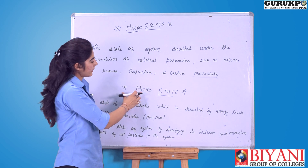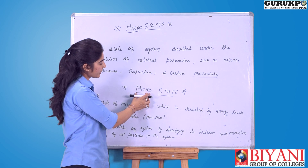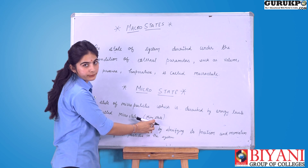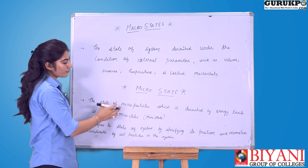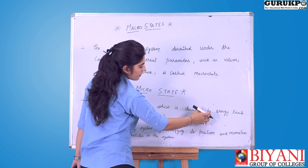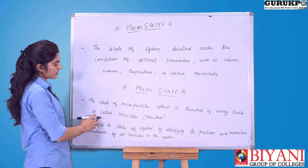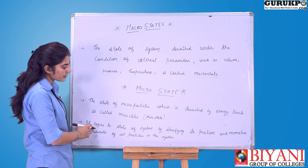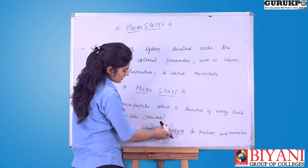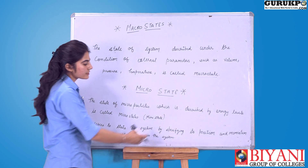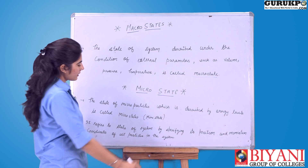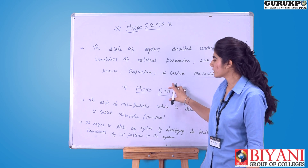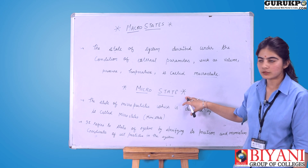A microstate — as the name suggests, micro means mini — is the state of particles described by energy levels. Another definition: it refers to the state of the system specified by its position and momentum coordinates. These are the two terms: macrostate and microstate.